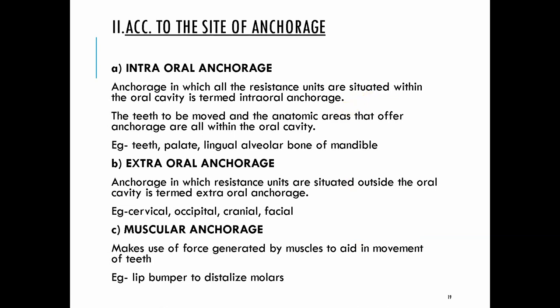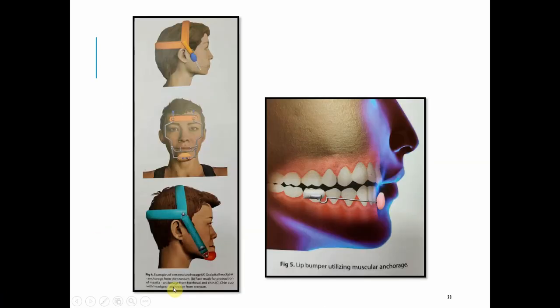Intraoral anchorage is where all anchorage resistance units are situated within the oral cavity — both the teeth to be moved and the anatomical areas offering anchorage are inside the mouth. Examples include teeth, the palate, and the lingual alveolar bone of the mandible. Extraoral anchorage refers to resistance units situated outside the oral cavity — such as the cervical area, occipital bone, cranial bone, and facial bone. Muscular anchorage, as discussed, uses hypertonic muscles such as the lip via a lip bumper to distalize molars.